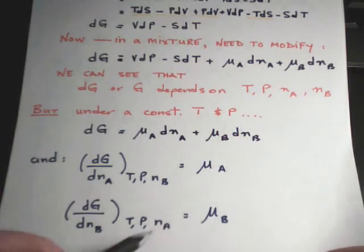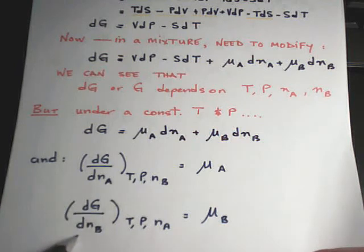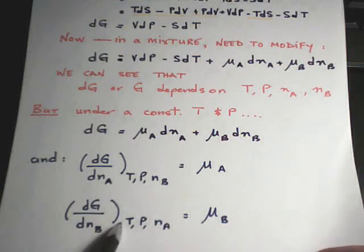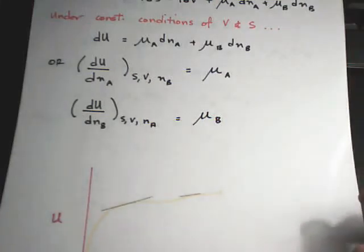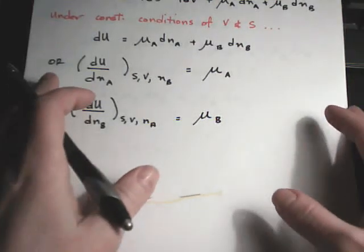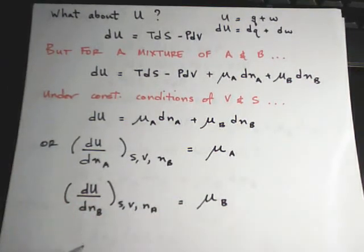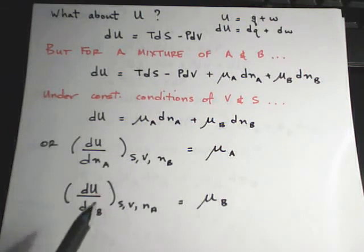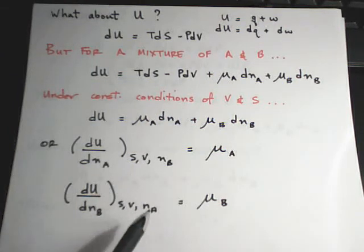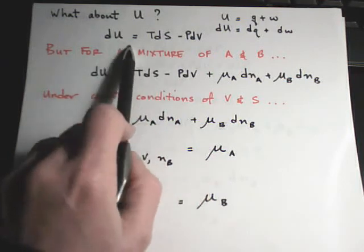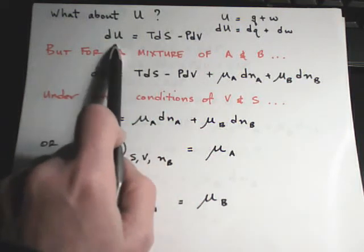The chemical potential is written in terms of Gibbs free energy only when temperature and pressure are constant. If we have a different set of conditions — for instance, can we write the chemical potential in terms of internal energy? — we can, but it requires a different set of constant conditions.